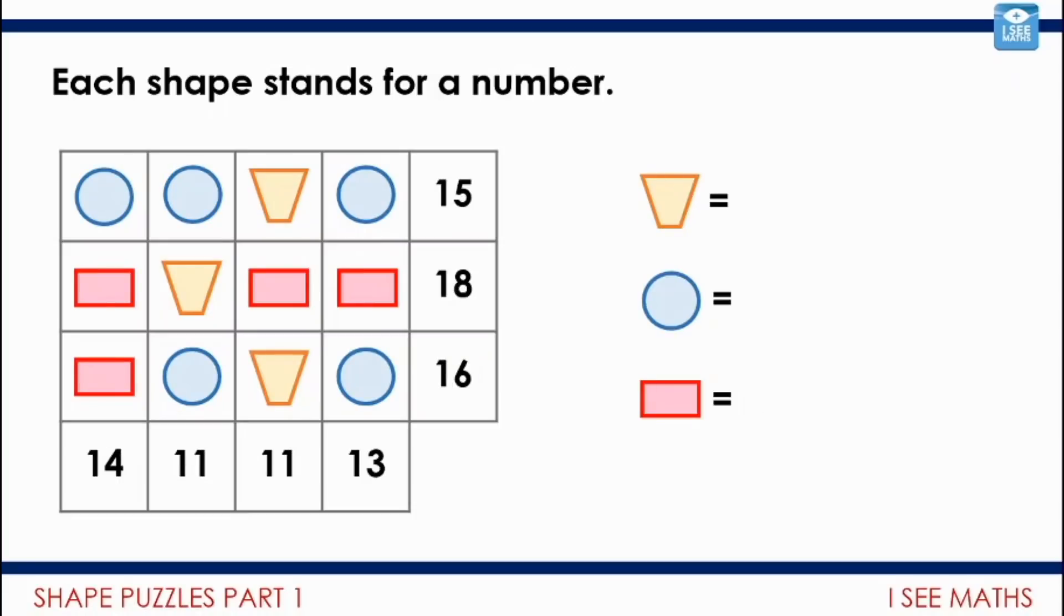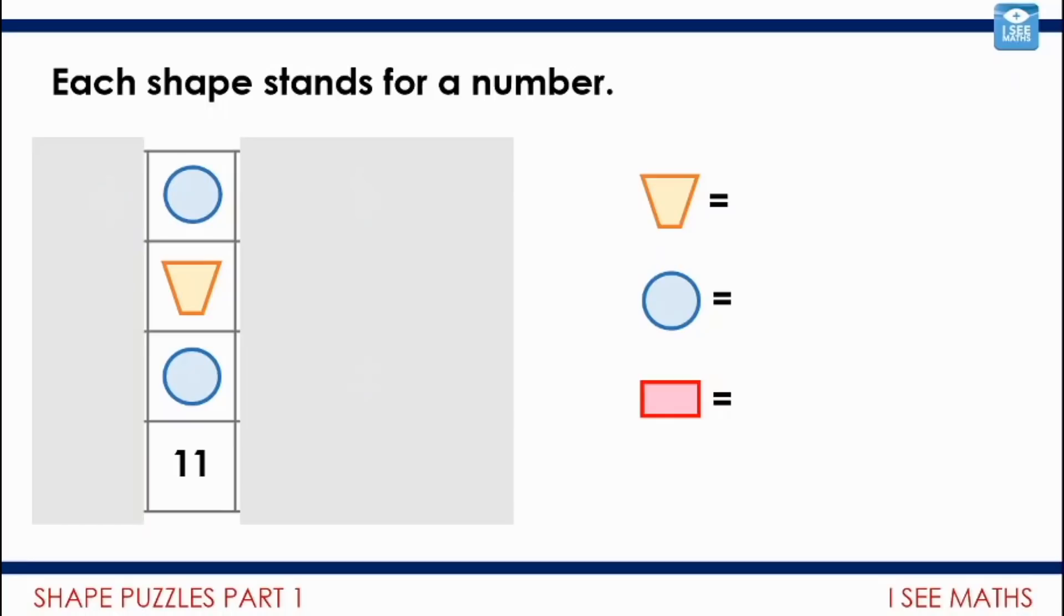Now this puzzle is slightly different because there isn't a line made up from all the same shape. I'll show you where I would start. I would actually start by looking just at this column. I'm going to explain why: a circle plus a circle plus a trapezium equals 11. Now this is a bit like the second example we had a look at when we were introducing this style of task—circle plus a trapezium plus a circle equals 11.